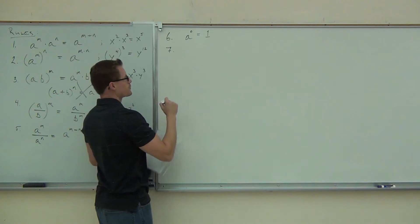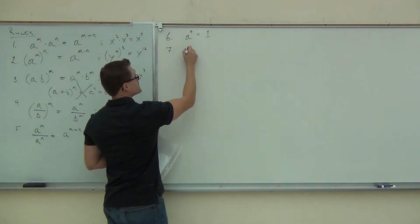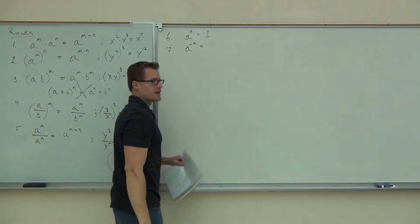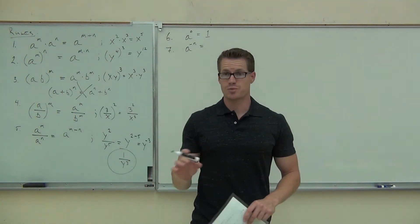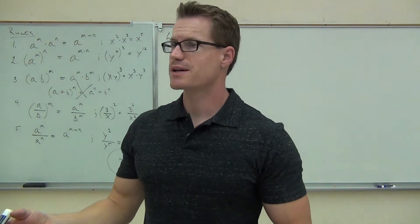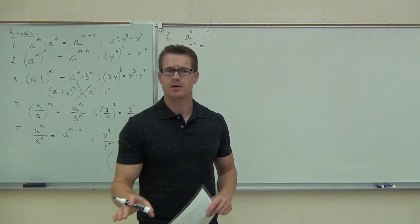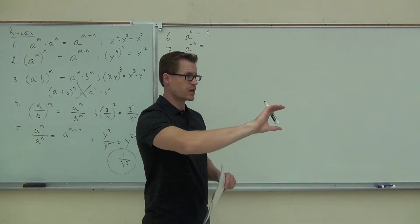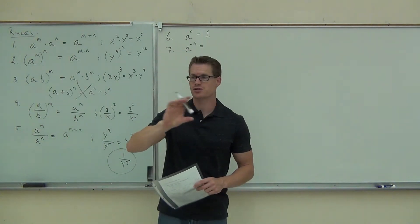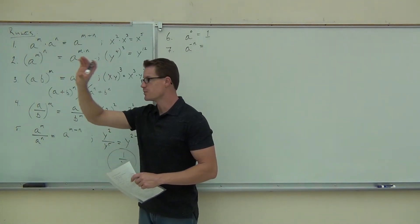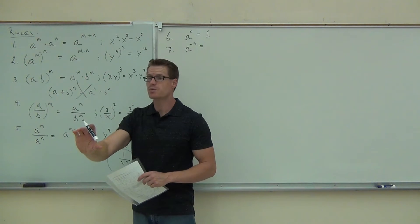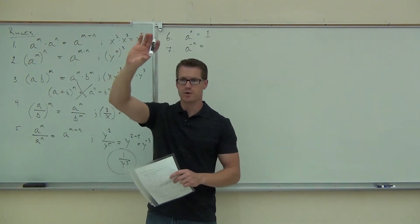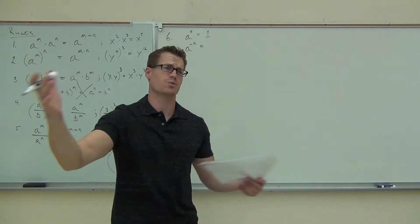And lastly, a refresher. We did this last time, just a good little note to have. Anything to the negative exponent, we can always change it to a positive exponent by doing what? So wherever it is, we change the part of the fraction that's on. If it's on the numerator and it's negative, we move it to the denominator. If it's on the denominator, we can make it positive by moving it to the numerator.